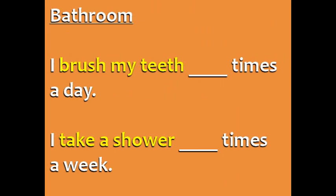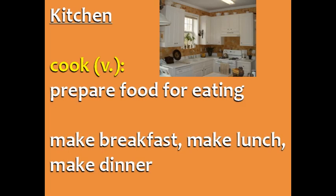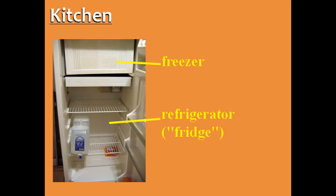Try to complete these sentences now. Kitchen. Time to go into the kitchen. In the kitchen, you can cook — prepare food for eating. When talking about a specific meal, we usually use the verb make: make breakfast, make lunch, and make dinner. You can keep food cold in the refrigerator, or fridge for short.